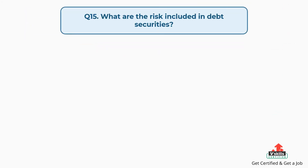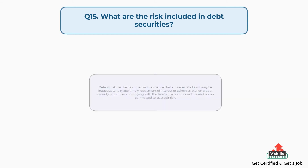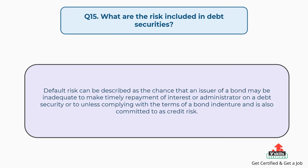Question number fifteen: what are the risks included in debt securities? The answer is, default risk can be described as the chance that an issuer of a bond may be unable to make timely repayment of interest or principal on a debt security, or to comply with the terms of a bond indenture, and is also referred to as credit risk.